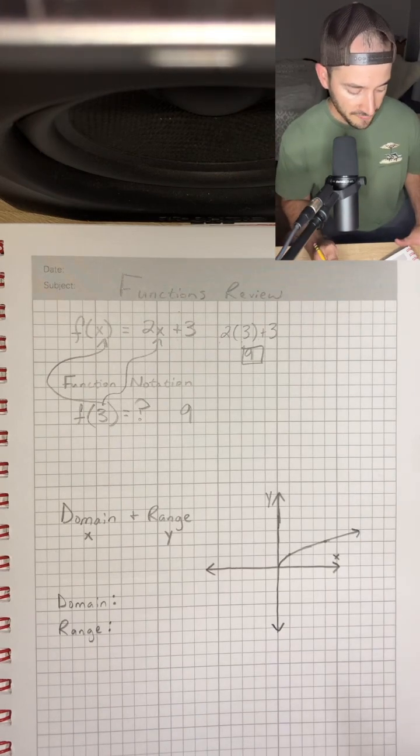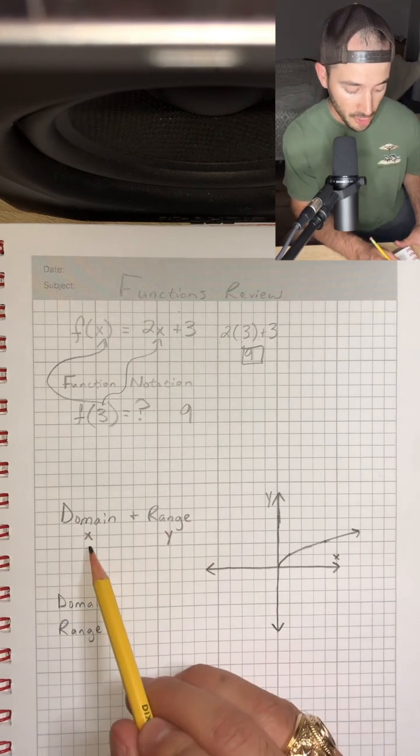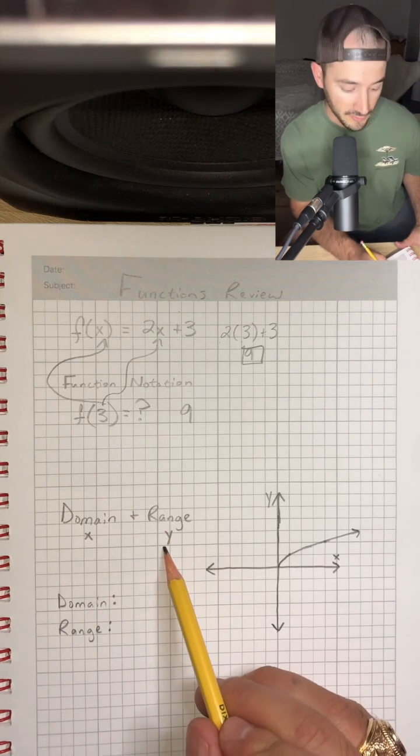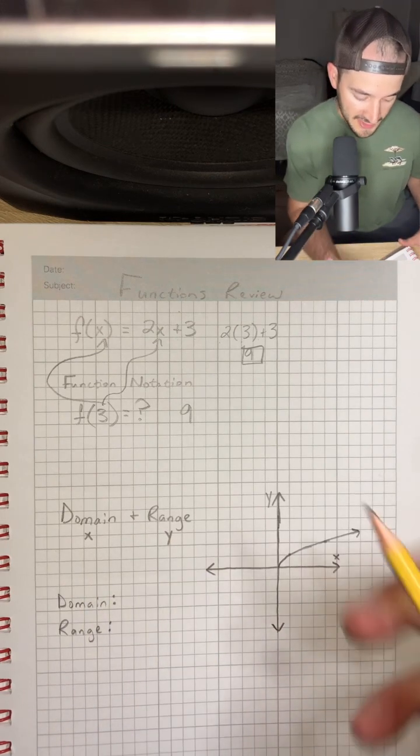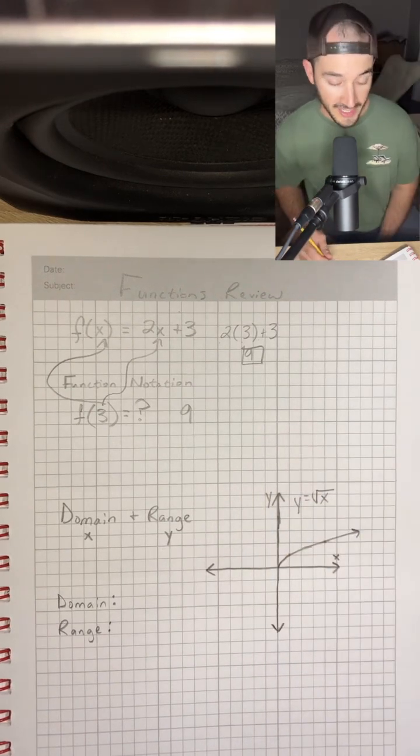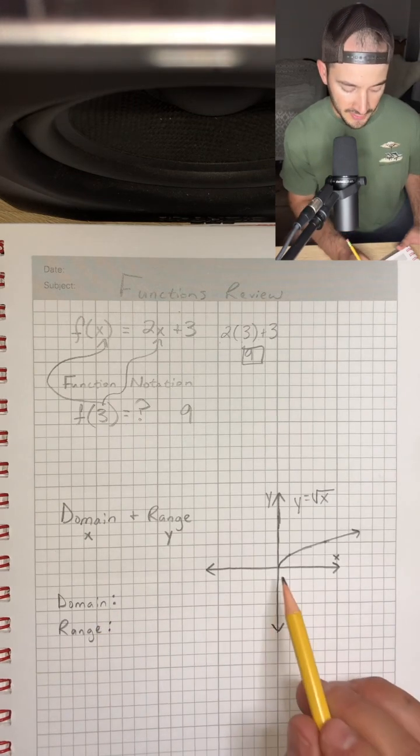Now, the other thing that's really important with functions is determining the domain and range. So domain is always your x values, range is all your y values. Let's look at this graph, and this graph is actually y equals square root of x. So we want to find the domain and range of this graph.